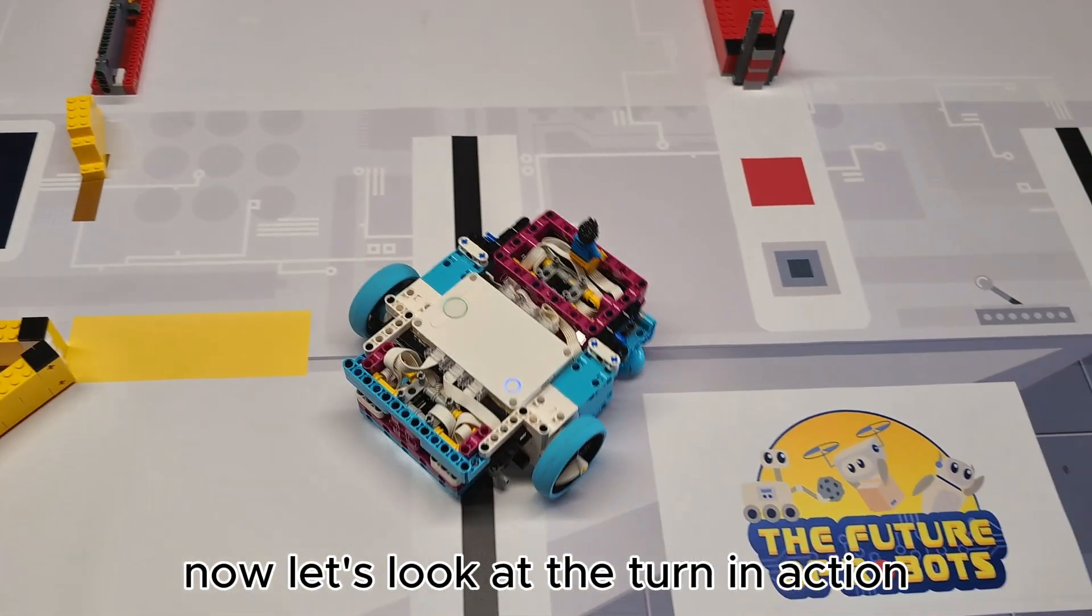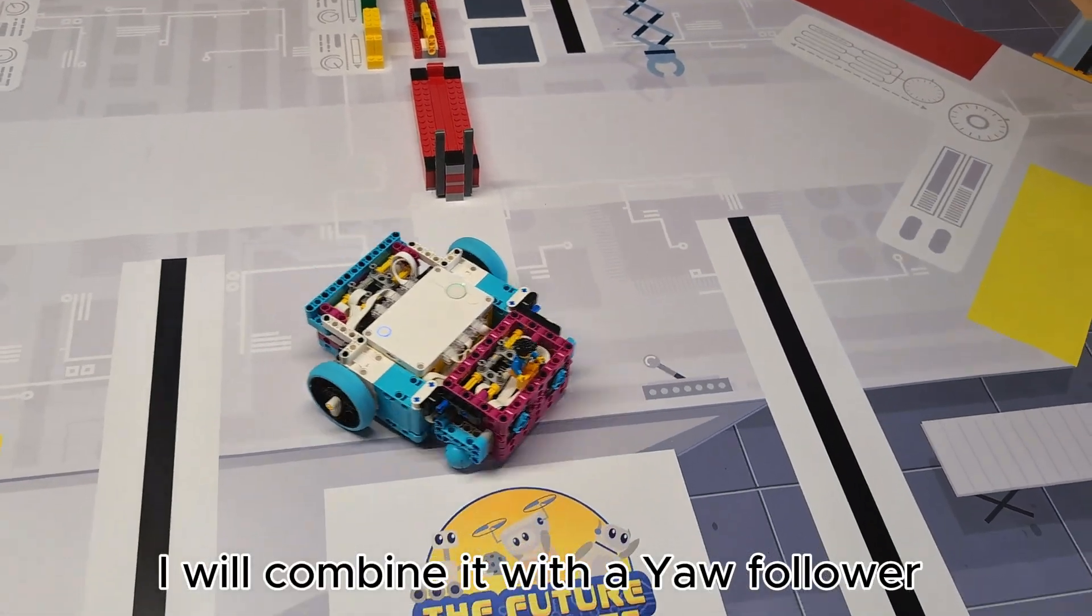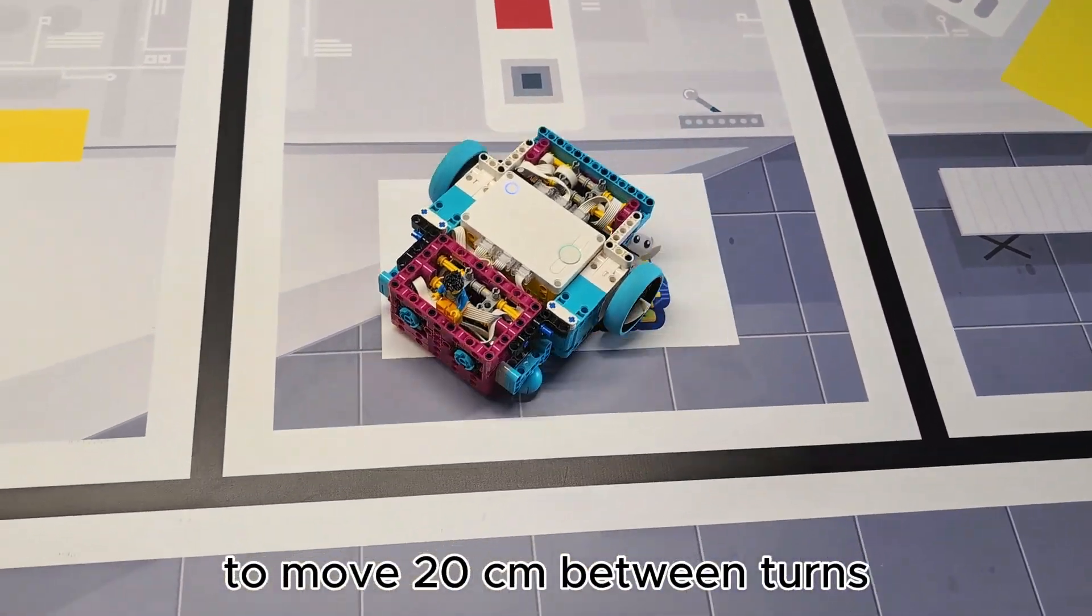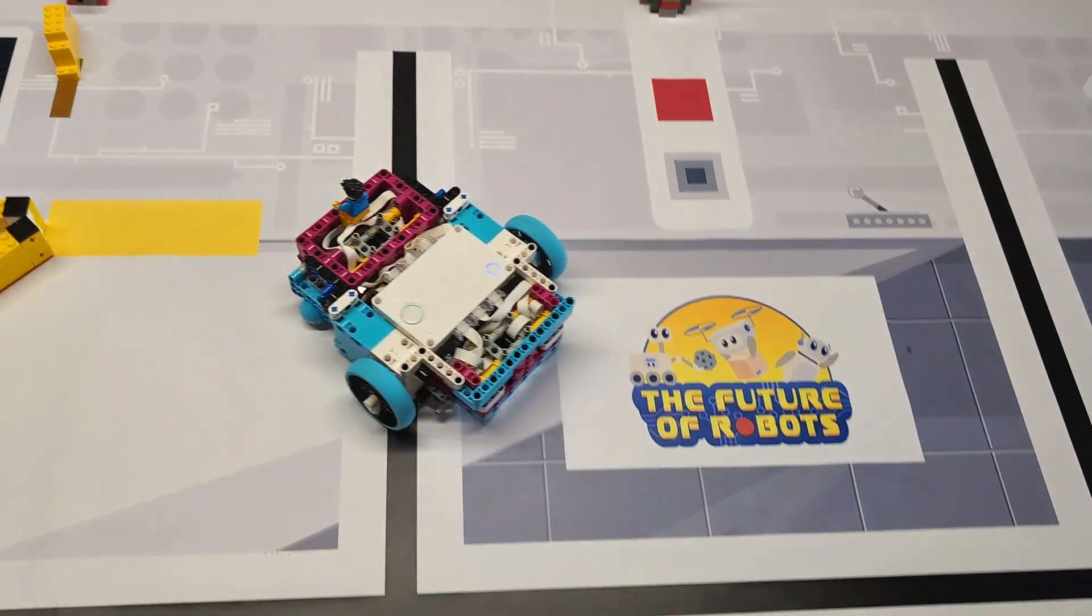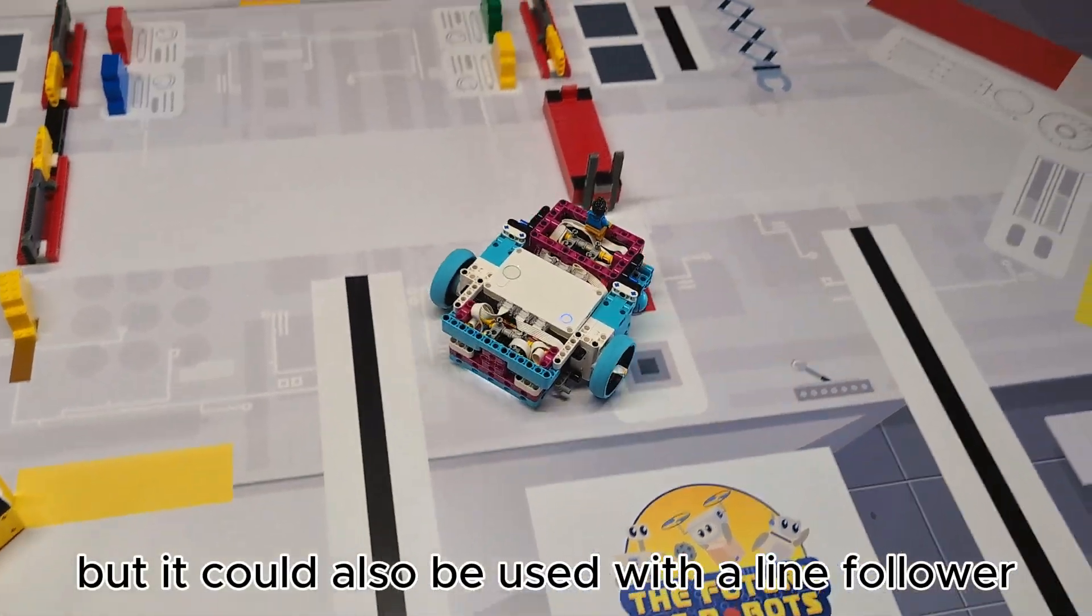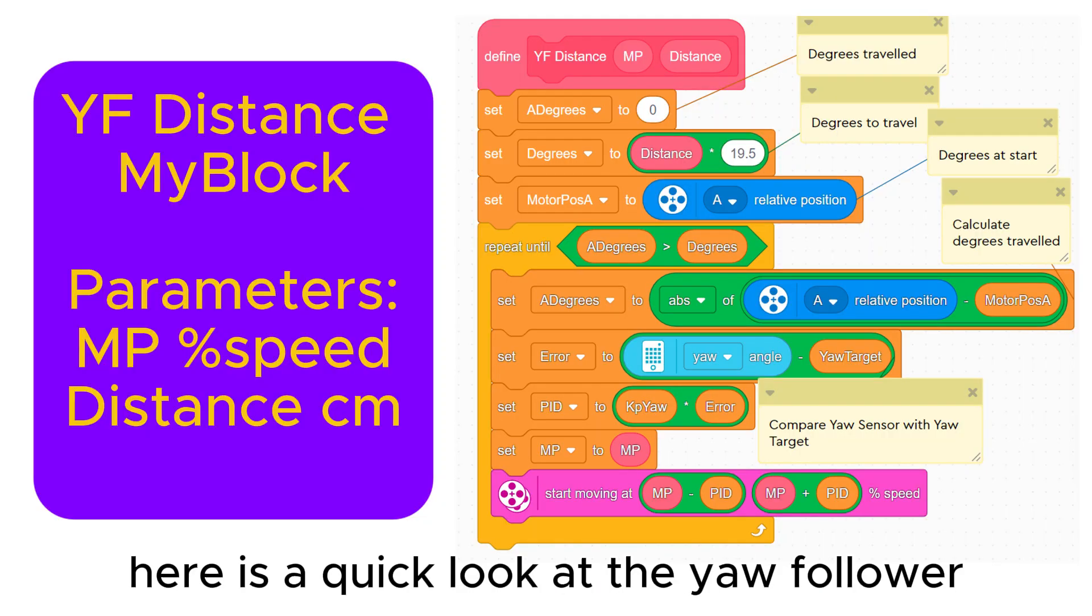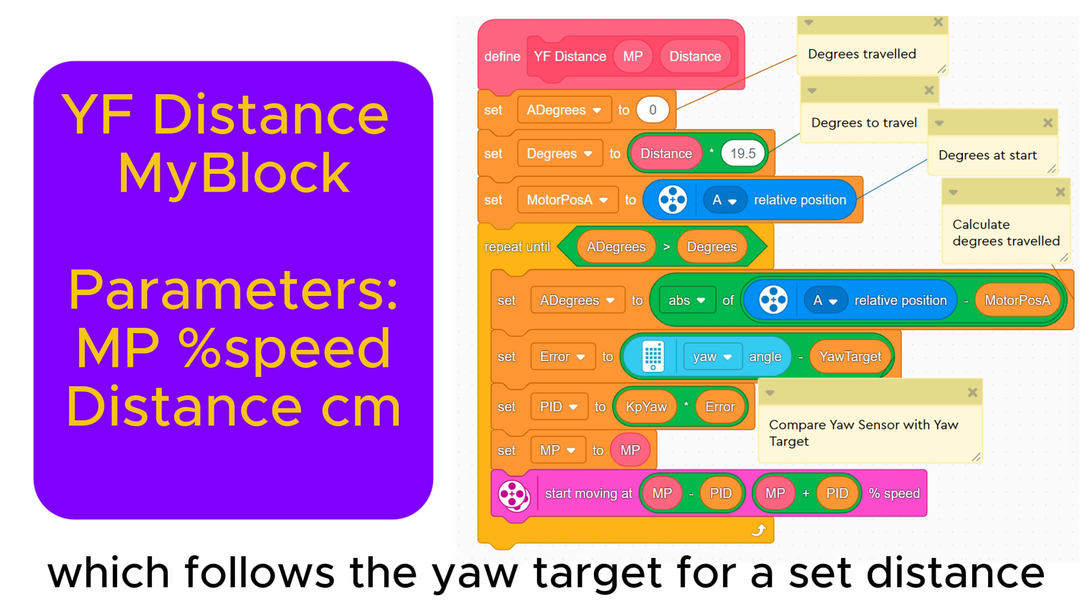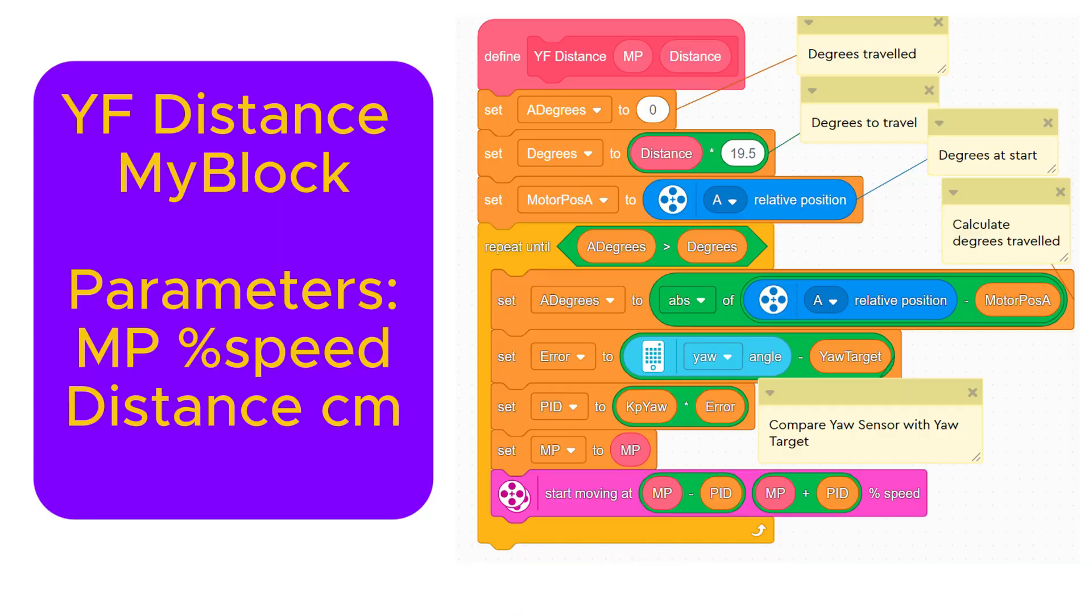Now let's look at the turn in action. I will combine it with a yaw follower to move 20cm between turns, but it could also be used with a line follower. Here is a quick look at the yaw follower, which follows the yaw target for a set distance at speed MP.